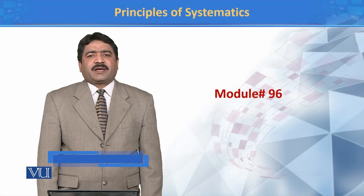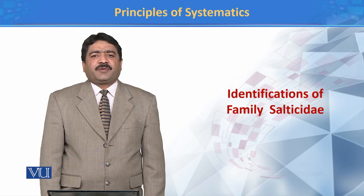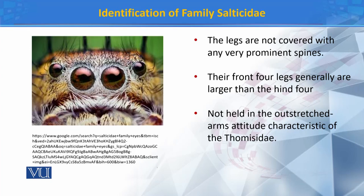Principles of Systematics, Module 96: Identification of Family Salticidae. Salticidae are arachnids that belong to Phylum Arthropoda. They are generalist predators that consume insect pests present in agroecosystems all over the world. They are strictly carnivorous. According to the World Spider Catalog, there are more than 600 genera of Salticidae. The Salticidae family is considered the largest family of spiders, contributing more than 13% of all spider species.